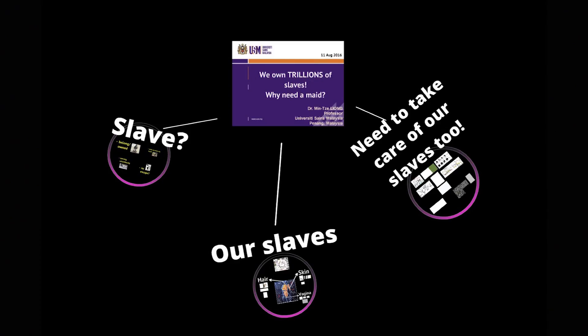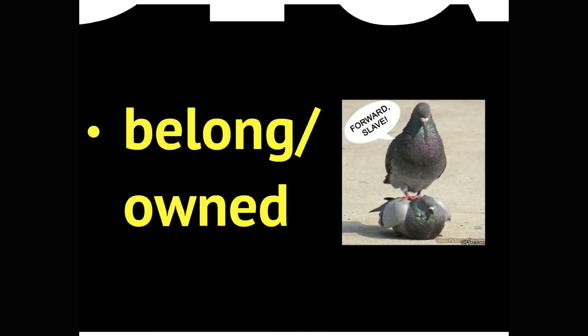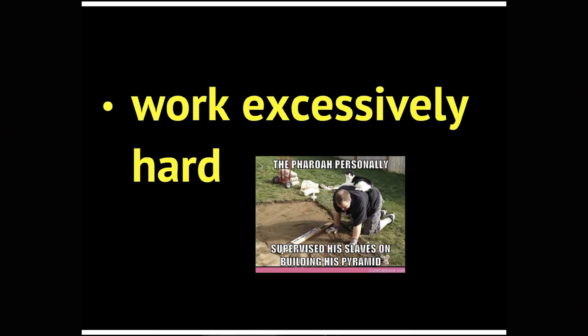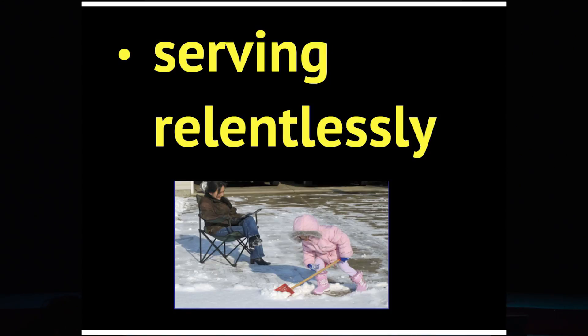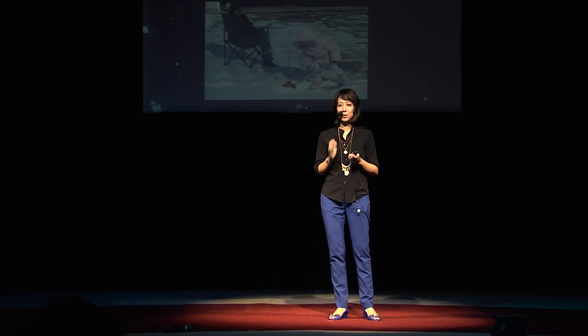I'm going to talk about three matters today. First, what are slaves? What are our slaves? And the need of us to take care of our slaves as well. When we look at slaves, how do we define them? They belong to us — we own them. They work relentlessly 24 hours, 24-7, and there's no escape. The only way to escape is death. And that's how it is when they are serving relentlessly. Our slaves do that for us, 24-7, with or without our commands.